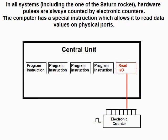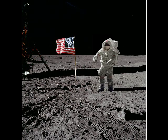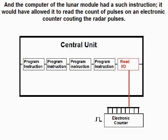In all systems, including the one of the Saturn rocket, hardware pulses are always counted by electronic counters. The computer has a special instruction which allows it to read data values on physical ports. The computer of the lunar module had such an instruction, which would have allowed it to read the count of pulses on an electronic counter counting the radar pulses.